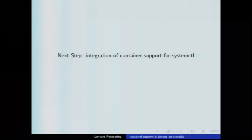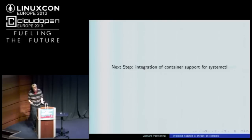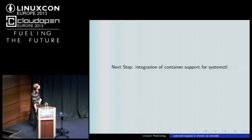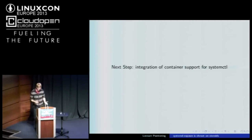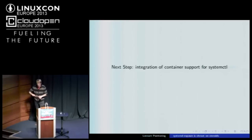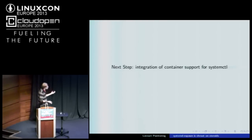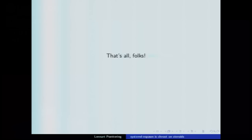I already mentioned we want nice integration with systemctl so it can apply operations on multiple containers. Again, this is not specific to nspawn — nspawn is what we use for development. Daniel Berenger, who hacks on LibVirt LXC, is also very good at quickly adding similar integration into LibVirt LXC. So our goal is: use nspawn on your local stuff to debug, test, build, and profile, then ship it on LibVirt LXC — but have the same kind of integration available in ps, systemctl, machinectl, and all those tools.